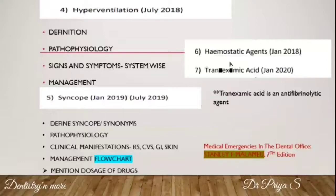Hemostatic agents have already been discussed in the second video on question paper discussion. Hemostatic agents are of three types: mechanical, thermal, and chemical. Quote a few examples and explain two examples from each category.